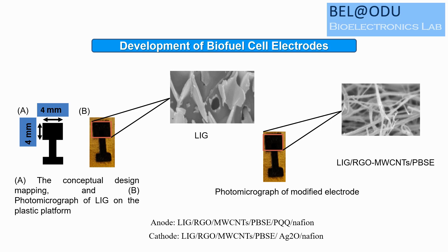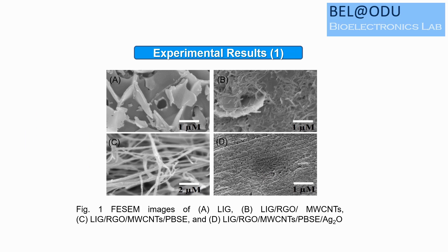The photomicrograph shows the laser induced graphene on the plastic platform and the modified electrode. The anode was modified using rGO-MWCNT composite and PBAC. The anode used PQQ and Nafion, and the cathode used silver oxide and Nafion. A morphological study was conducted using PBAC functionalization.